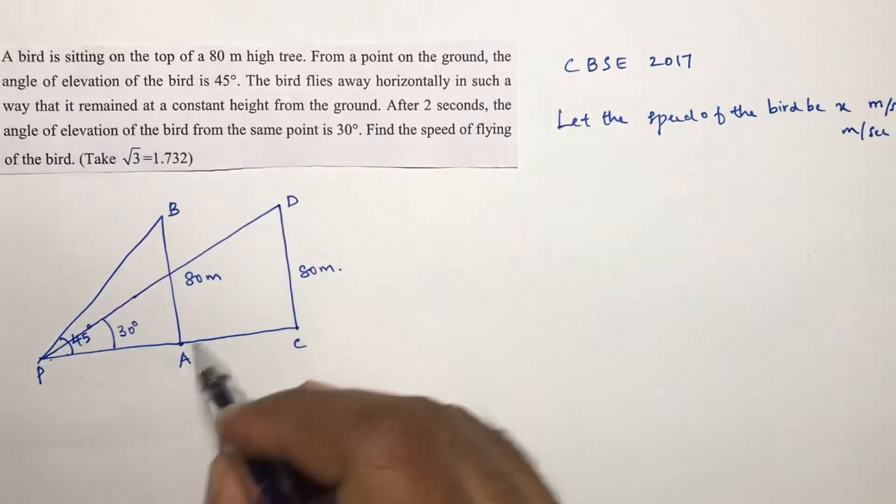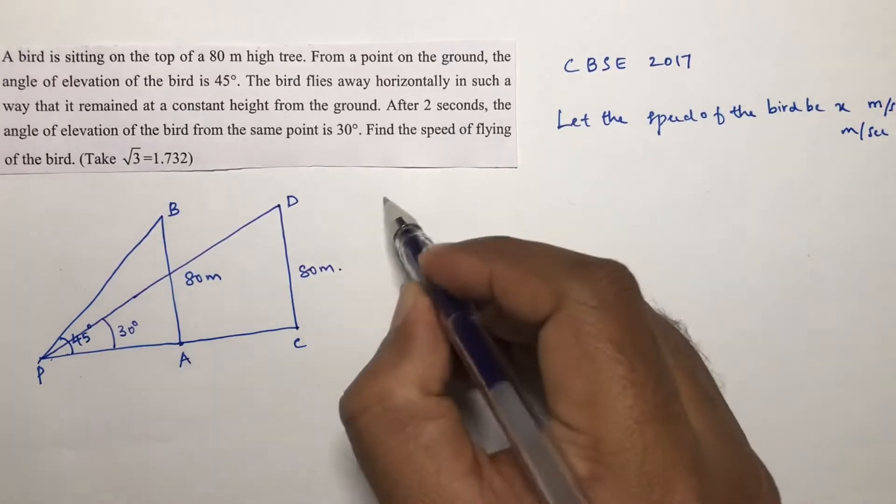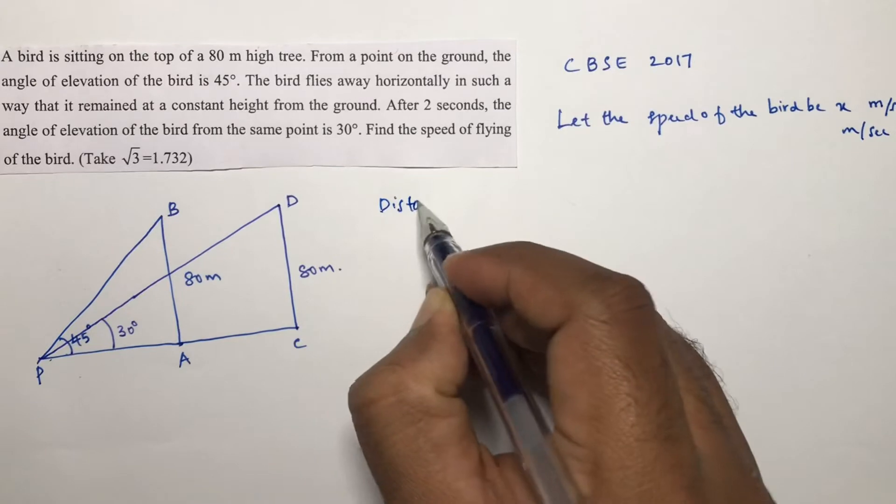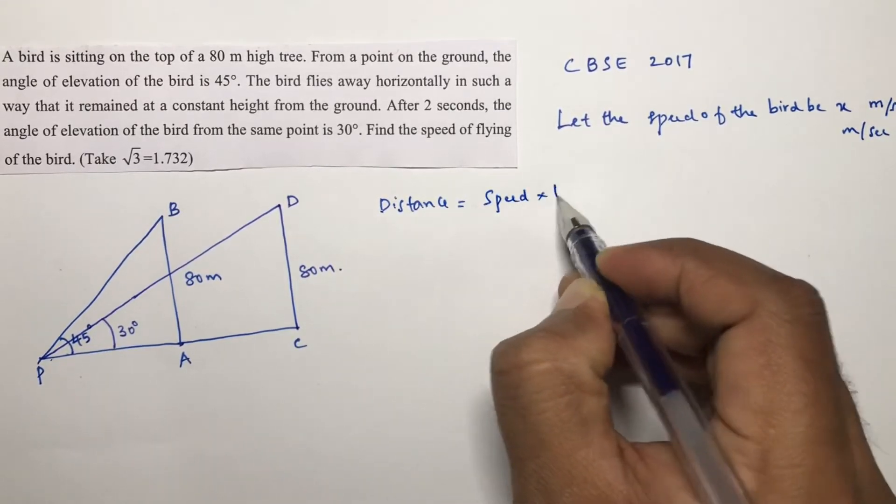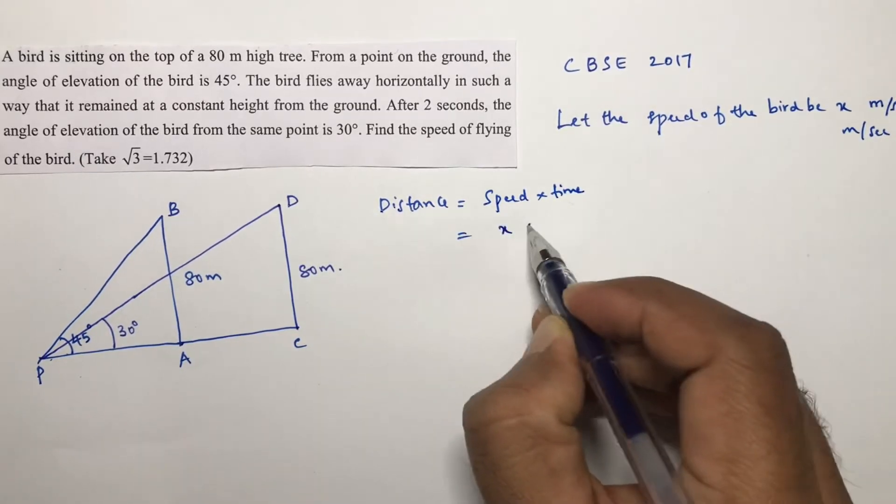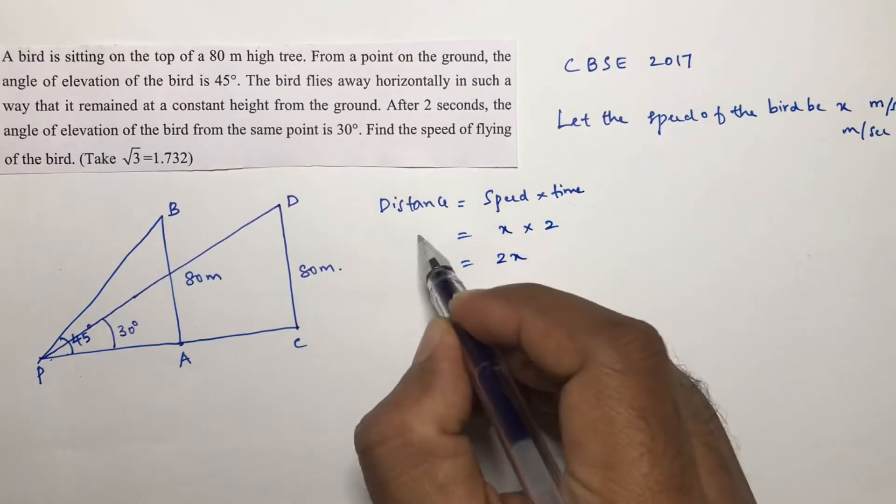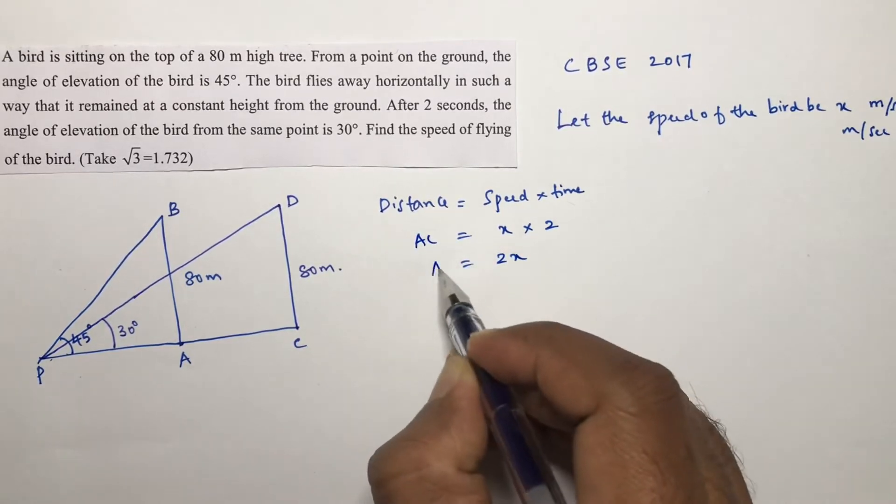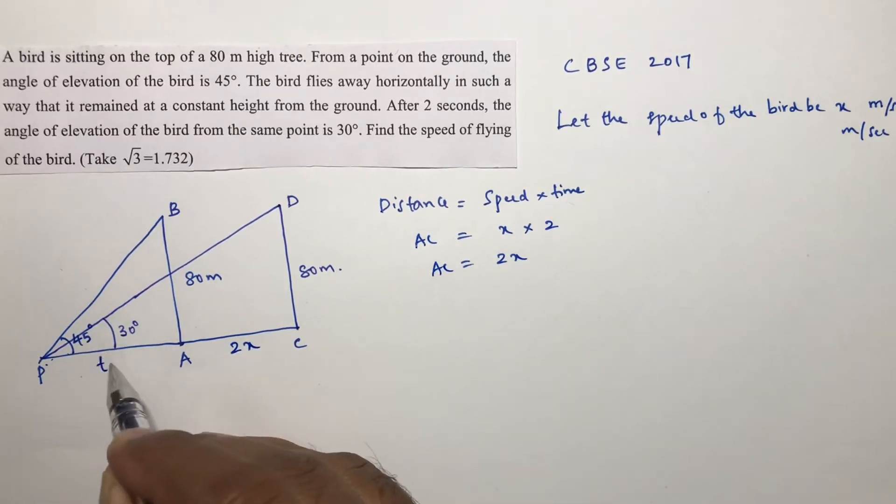Now AC is a distance, so distance equals speed into time. Speed we consider as x and time is two seconds, so distance will become AC, we can write it as 2x.